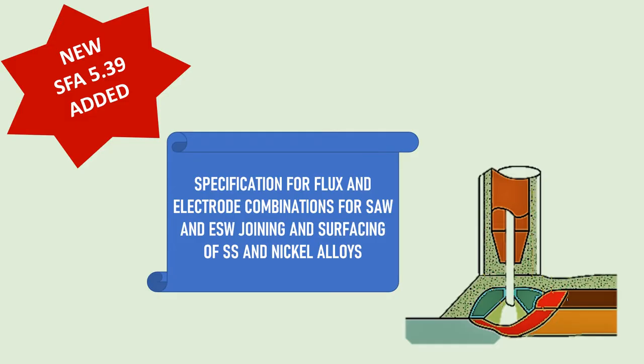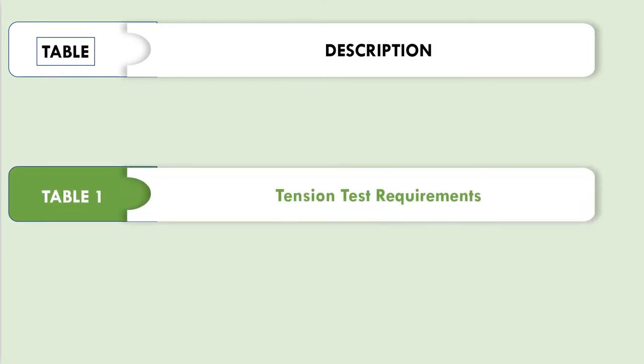Let us now understand the newly added SFA number 5.39 — a specification for flux and electrode combinations for submerged arc welding and electro-slag welding joining and surfacing of stainless steel and nickel alloys. For understanding the designators constituting the flux electrode classification, there are four tables given in SFA 5.39, which are essential to decipher the designator.